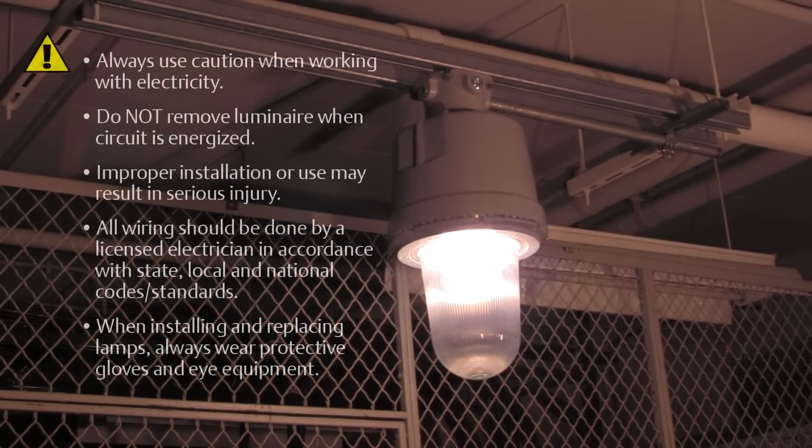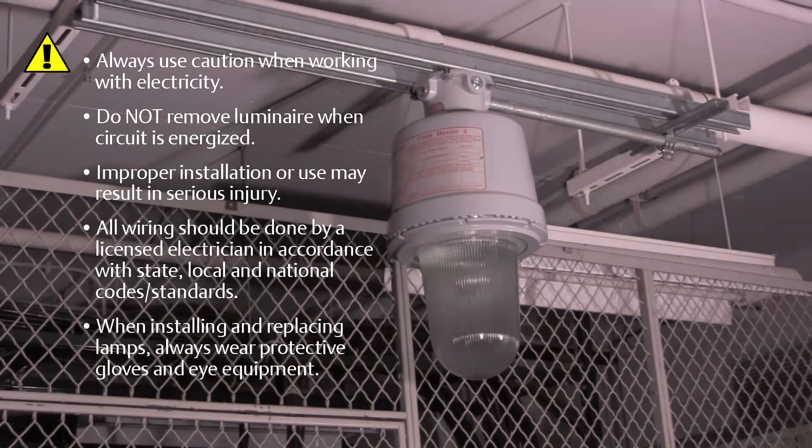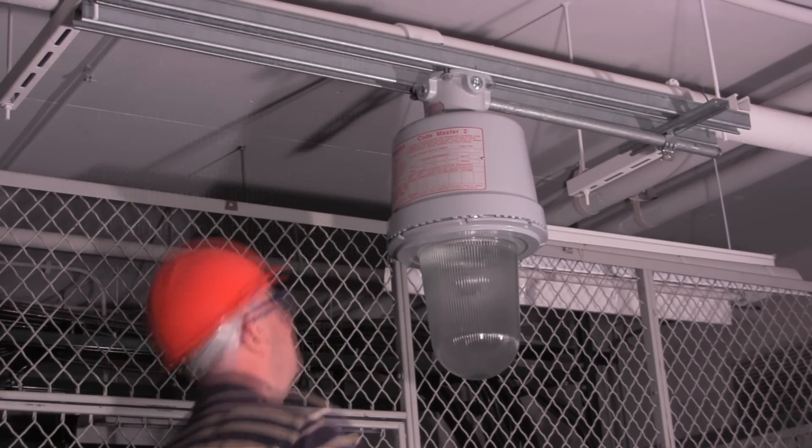Today we are going to show you how easy it is to replace an existing explosion-proof Appleton Codemaster HID lighting fixture with a new Codemaster LED fixture. First, you want to make sure that you turn off the power to the existing Class 1 Division 1 fixture.